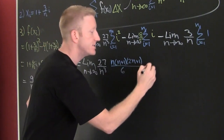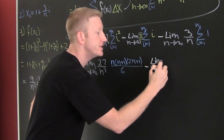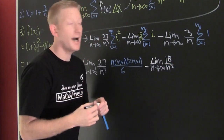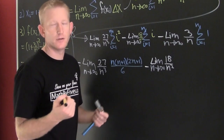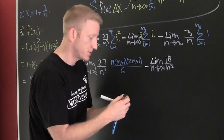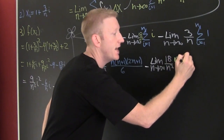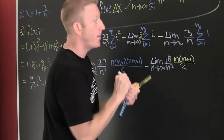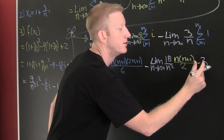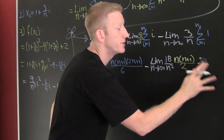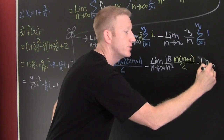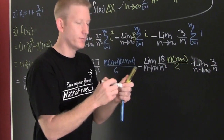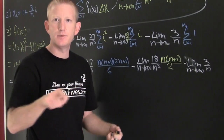Continuing: minus the limit as n goes to infinity of 3/n times the sum from 1 to n of 1. What is the sum from 1 to n of 1? That means I'm adding 1 up n times, which gives n. So that last term becomes the limit of 3/n times n.